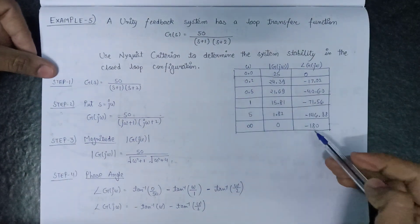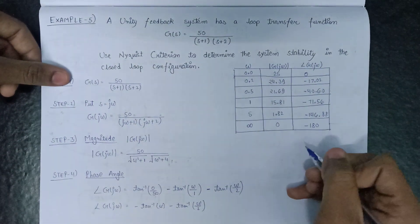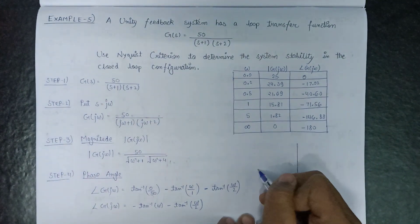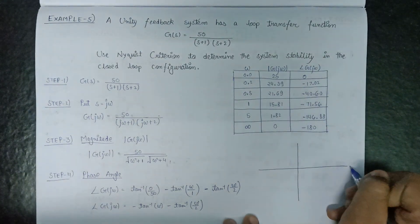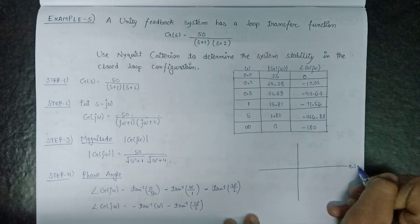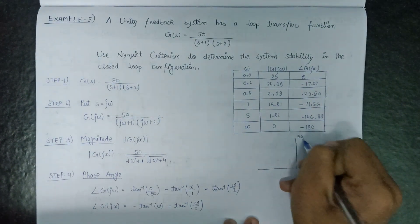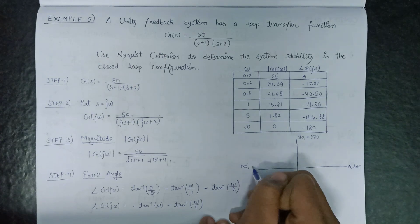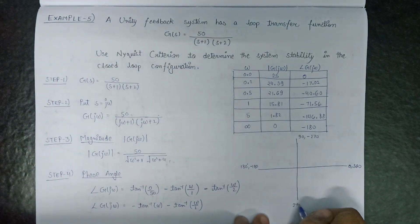This is the complete table. After this, on the basis of this table, we plot our polar plot. Here is the imaginary axis and here is the real axis. The reference directions are: 0° and 360° here, 90° or minus 270° here, 180° or minus 180° here, and 270° or minus 90° here.